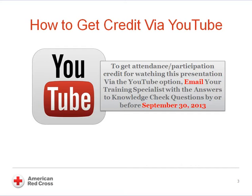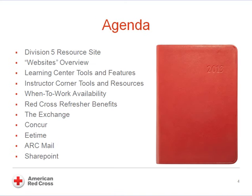To receive credit in your record for participating in the pre-recorded session, please email the answers to the knowledge check questions found in this presentation to your training specialist by or before the end of the month — in this case September 30th, 2013. The agenda includes a Division 5 resource site review, website purposes, the Learning Center (also known as Saba), instructor corner tools and resources, how to post your availability, the Red Cross Refresher site, the Exchange intro website, Concur for travel, e-time to post your time card, ARC mail, and the PTOC SharePoint folder.